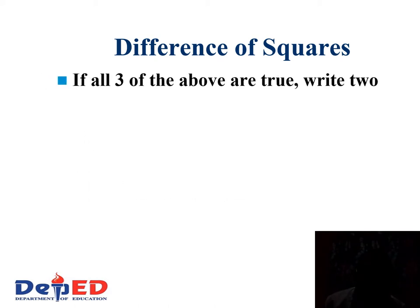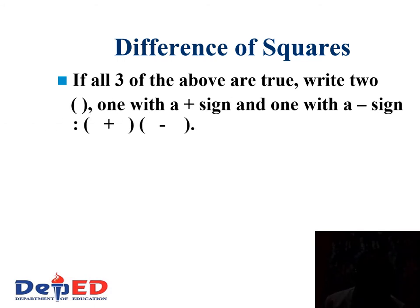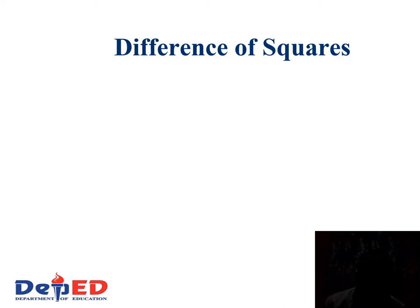And if all three of the above are true, write two parentheses — open and close parentheses — one with a positive sign and one with a negative sign, just like in that illustration.